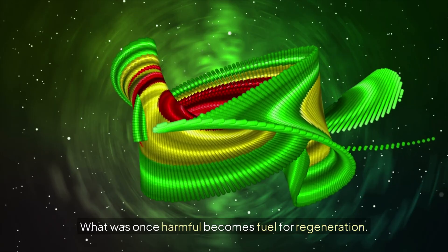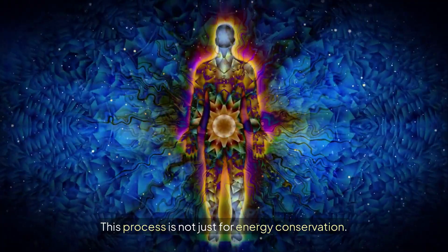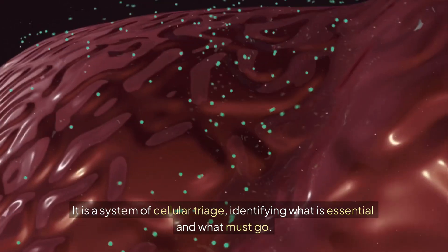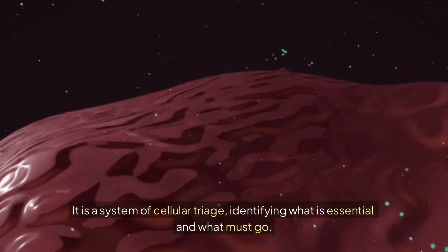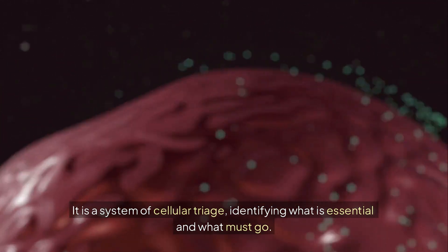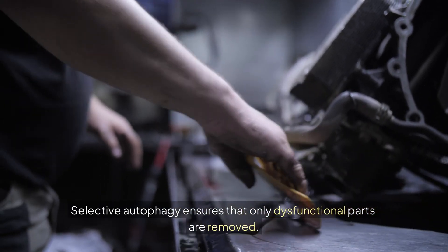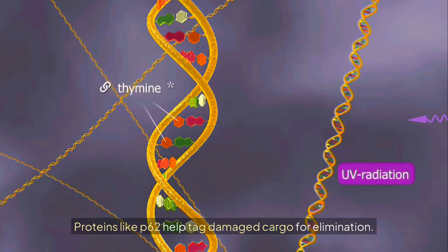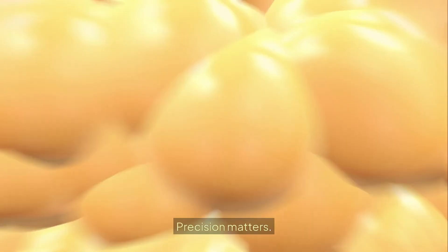What was once harmful becomes fuel for regeneration. This process is not for energy conservation. It is a system of cellular triage, identifying what is essential and what must go. Selective autophagy ensures that only dysfunctional parts are removed. Healthy structures are left intact. Precision matters.